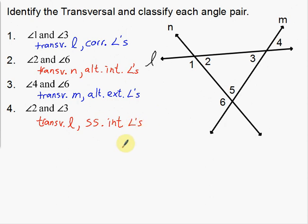The abbreviation SS stands for Same Side. To summarize: identify the transversal and classify each angle pair. The four classifications are corresponding angles, alternate interior angles, alternate exterior angles, and same side interior angles. Hopefully you understand the notation and abbreviations, because sometimes when you learn vocabulary it's a little difficult to understand it with all the notation.